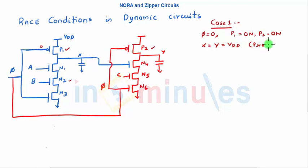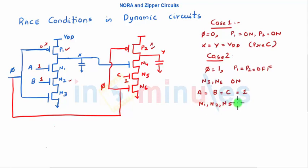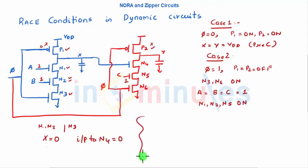Case two: when phi goes to one, P1 and P2 turn off, and N3 and N6 both turn on. Let's presume input A equals input B equals input C equals one, so all three inputs are one. That means N1, N2, and N5 are all on. When N1 and N2 are on, and N3 is also on, all pull-down transistors are on, so X should become zero, meaning the input to N4 should equal zero.